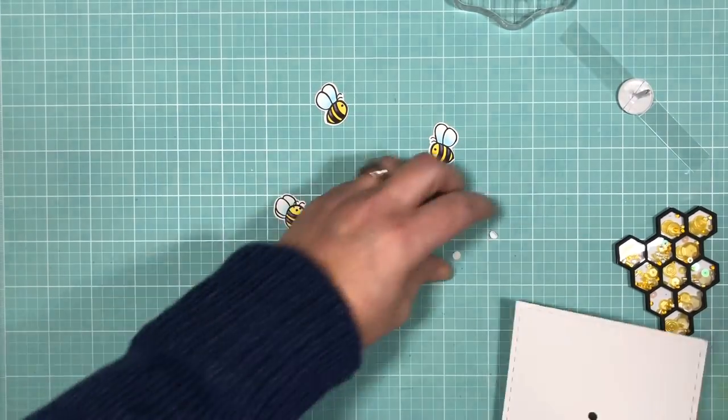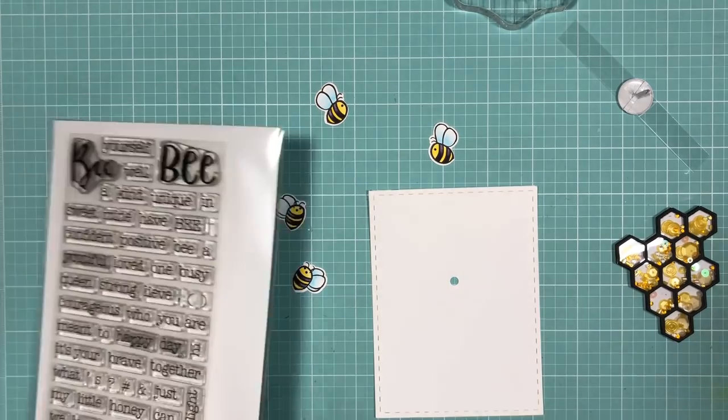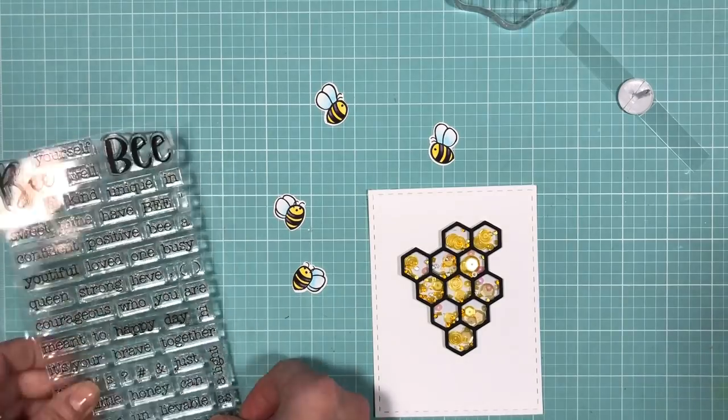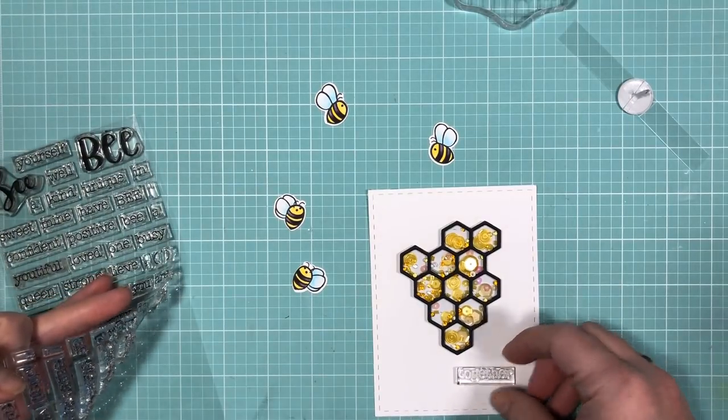So as you saw, I just punched out a hole in my front panel and that will mark the spot where I build my spin mechanism from. Before I start gluing anything to the front panel, I'm going to stamp out my sentiment.